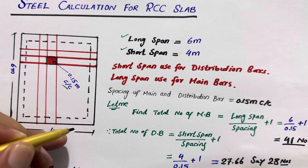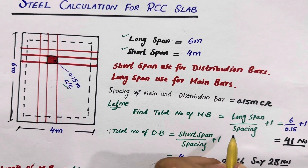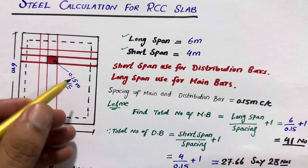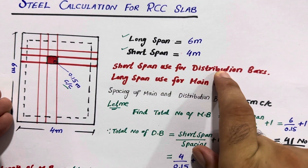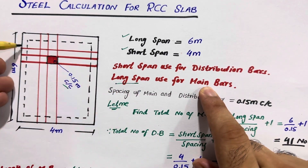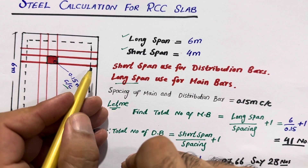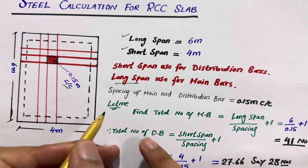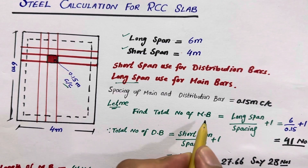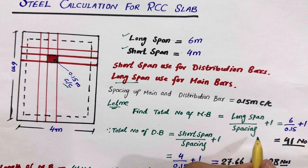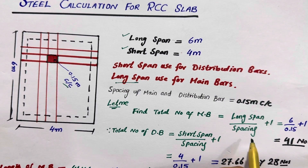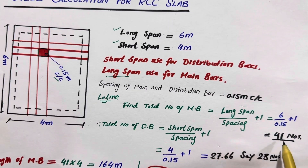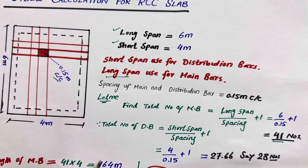Now let me find the total number of main bars — how many steel rods are required on this long span. The formula is: long span divided by spacing, plus one. So six meter divided by 0.15 meter, plus one. Therefore, we require 41 numbers of steel rods for the longer span.